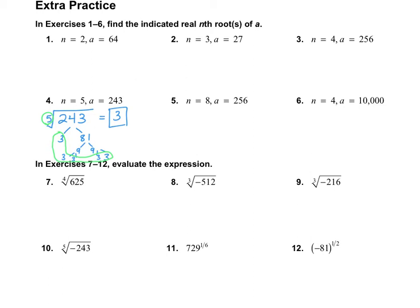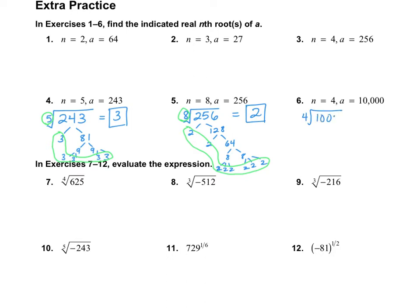Let's do number 5: the 8th root of 256. 256 is even, so divide by 2 to get 128, then divide by 2 to get 64. I recognize 64 as 8 times 8, and 8 is three 2s, and this 8 is also three 2s. We need 8 of them — and we have 1, 2, 3, 4, 5, 6, 7, 8. So my answer is 2. Now number 6: the 4th root of 10,000. That sounds like it's probably going to be 10. 100 times 100 gives us four zeros. And 100 is 10 times 10, and this 100 is also 10 times 10. I have four 10s — so my answer is 10.